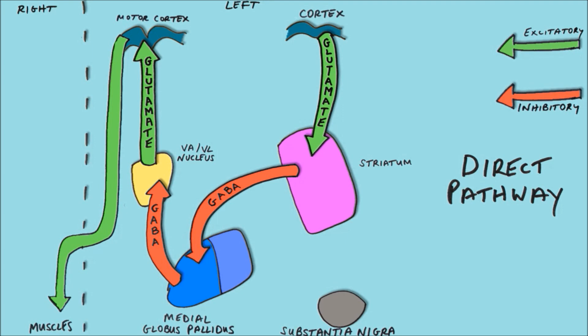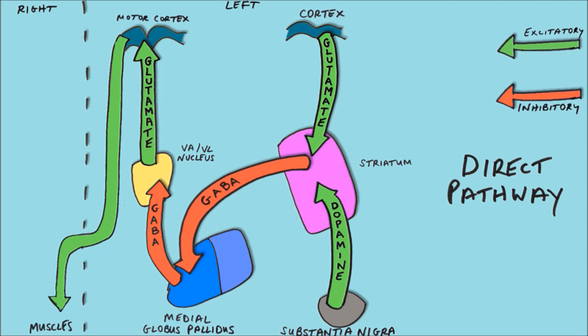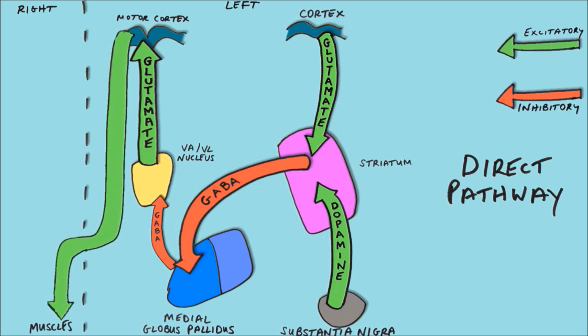Now let's look at the effect of the cortex and the substantia nigra on the direct pathway. The cortex sends excitatory glutamatergic neurons to stimulate the striatum. The substantia nigra also stimulates the striatum in the direct pathway, using dopaminergic neurons through the action of dopamine at D1 receptors. The effect of both is to increase the activity of the striatum, enhancing its inhibitory effect on the medial globus pallidus, thereby reducing that structure's inhibitory effect on the VAVL nucleus of the thalamus. This allows the VAVL nucleus to increase its excitation of the motor cortex, leading to greater motor output to the muscles.